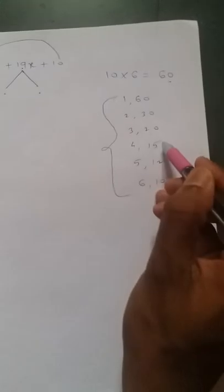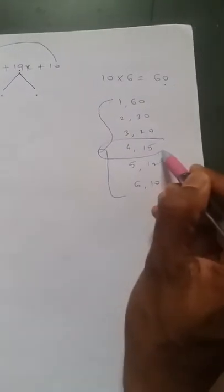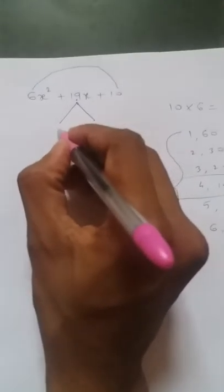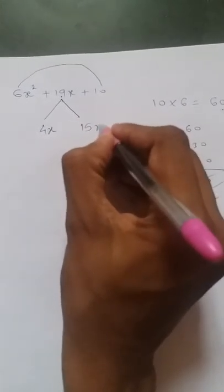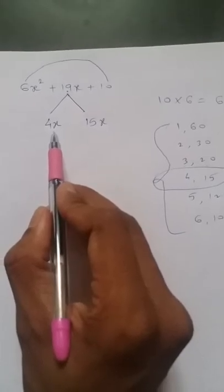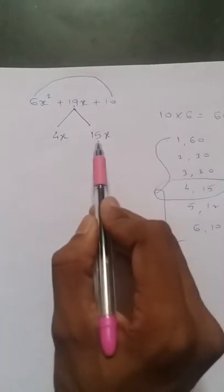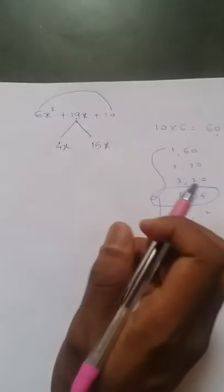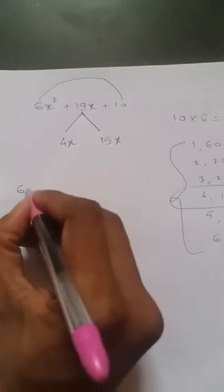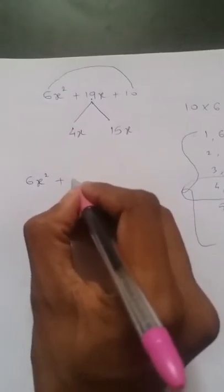Obviously 4 comma 15. So here 19x can be written as 4x plus 15x. 4x plus 15x is 19x, and 4x into 15x is 60x², so this works.